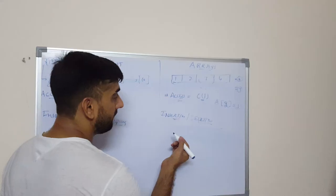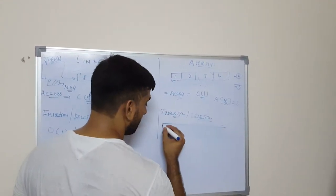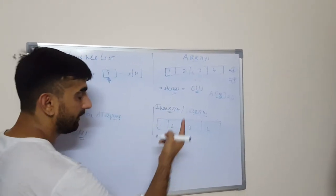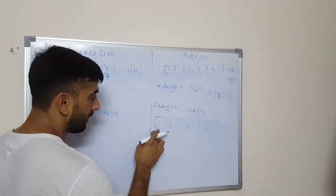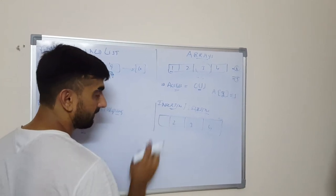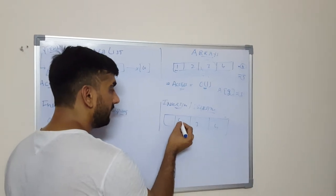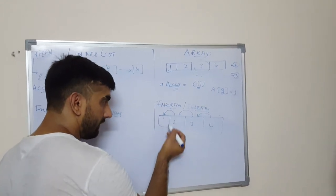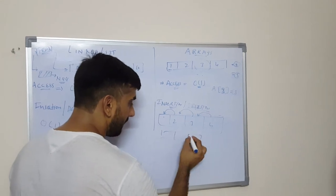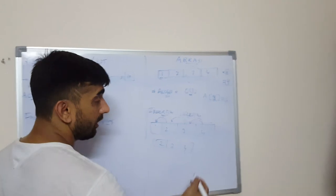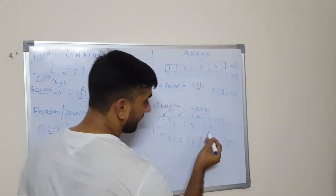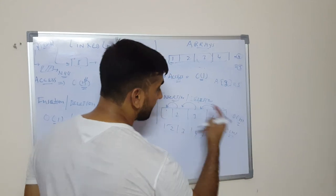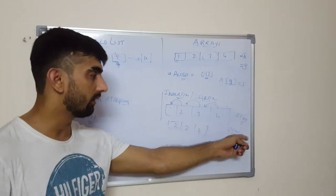In the similar way, if you have to delete at the beginning of an array - for example, this is my array with elements 1, 2, 3, 4 and you delete the first element - then you need to perform a shifting operation of the respective remaining elements. So there are O(N) operations taking place, where N is the number of elements present in that array. Therefore, insertion as well as deletion at the beginning inside an array always takes O(N) time complexity.